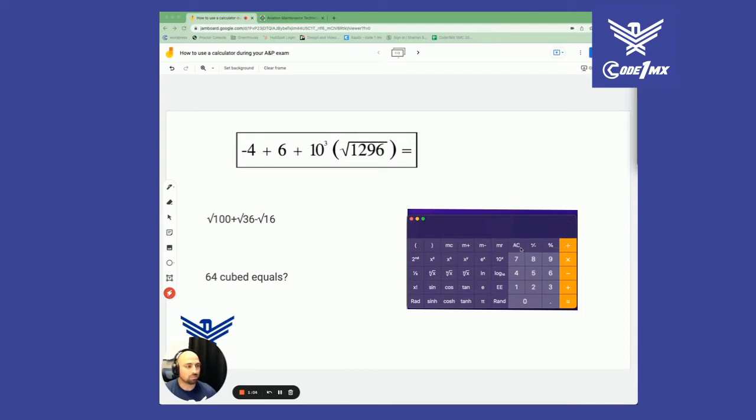Let's finish up the rest. Square root of 100 is 10, plus 36 square root there's going to be 6, so 16 minus the 16 square root is 4. You're going to come out with 12. These are coming from the sample questions here.